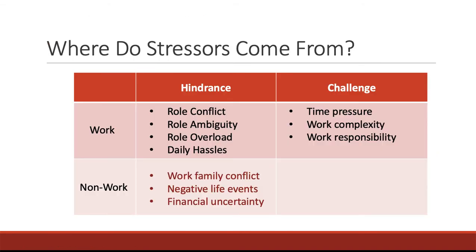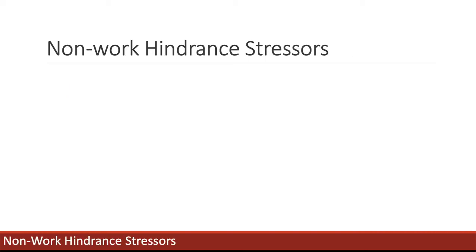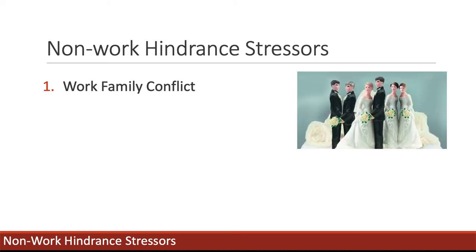Now we move into non-work stressors, of which there are three types. The first is work-family conflict — individuals have responsibilities both inside the home and in the workplace, and sometimes these get in the way of one another. This conflict can occur in two ways. Work-to-family conflict is when work responsibilities interfere with family obligations — for example, having to work overtime and missing your child's sporting event, or meeting with a client and missing bedtime or dinner with your family.